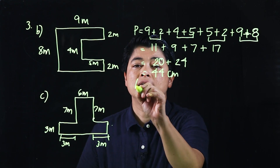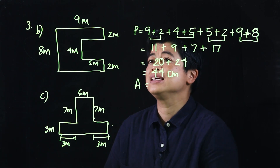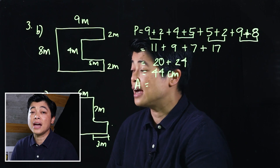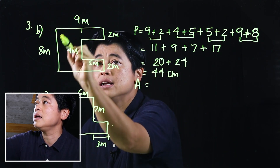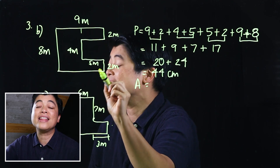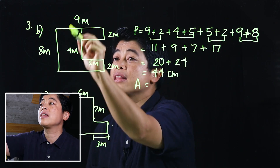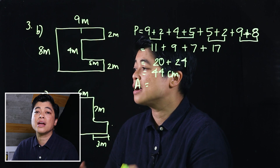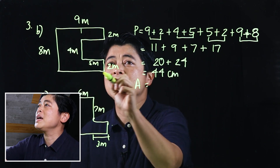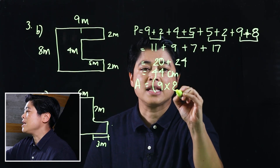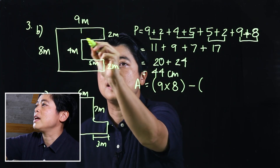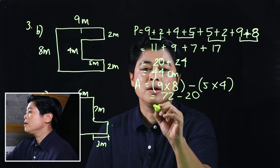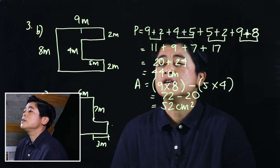To find the area of that figure, the easiest thing is to take the area of the whole thing and subtract a part. You could also take the sum of three rectangles, but that's harder. So I'll take the area of the big rectangle — 9 times 8 — and subtract the small piece — 5 times 4. That gives 72 minus 20, which equals 52 centimeters squared.